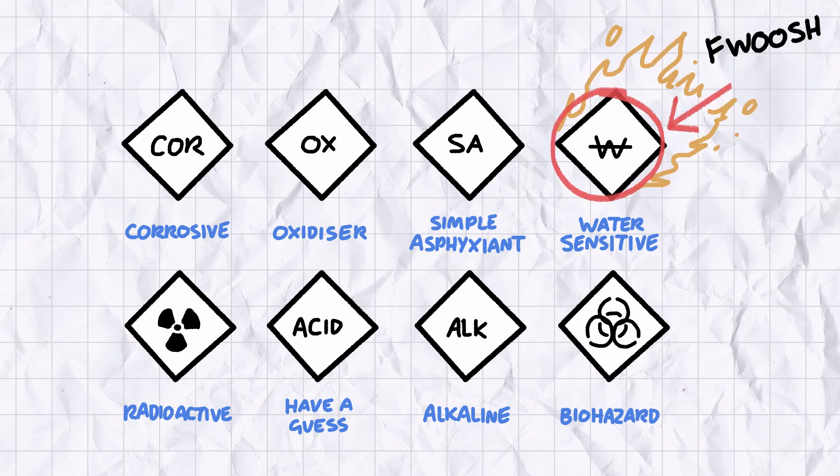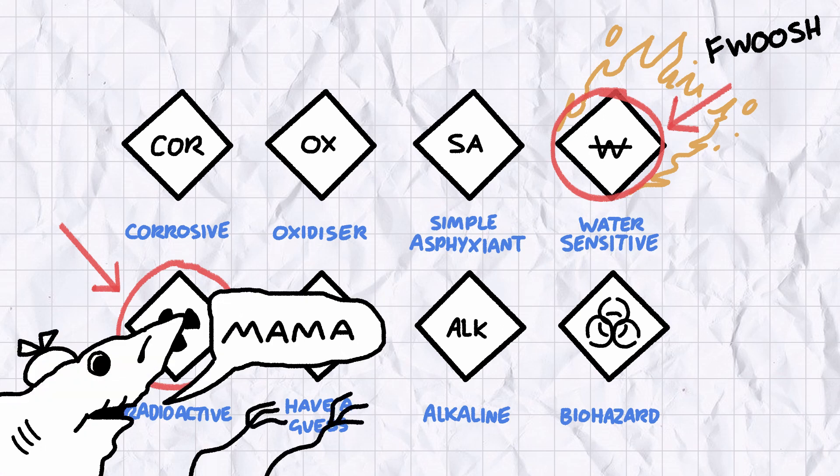This symbol means this compound reacts vigorously with water, and this one means don't put this compound near your nads unless you want your future children to be born with gills.